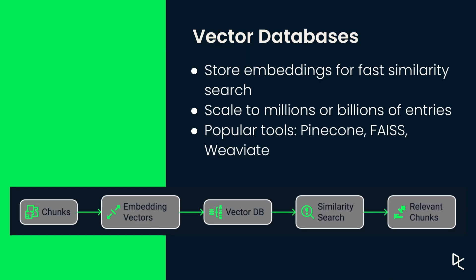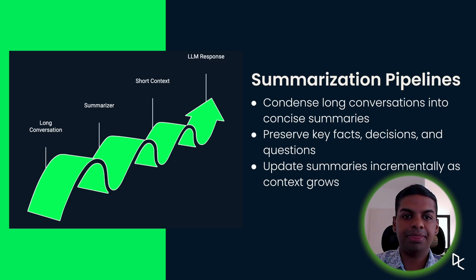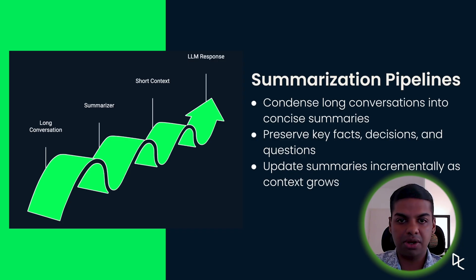Vector databases store embeddings for fast similarity search. They scale to millions or billions of entries. Popular tools include Pinecone — this is where your chunks live, ready to be retrieved whenever needed. Summarization pipelines help control context size by condensing long conversations into concise summaries, preserving key facts, decisions and questions, and updating them as the context grows.